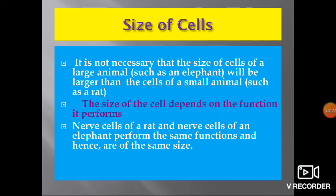It is not necessary that the size of cells of a large animal such as an elephant will be larger than the cells of a small animal such as a rat. The size of a cell depends on the function it performs. For example, nerve cells of a rat and nerve cells of an elephant perform the same functions and hence are of the same size.